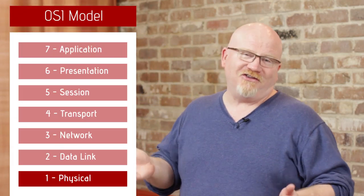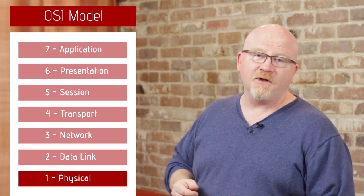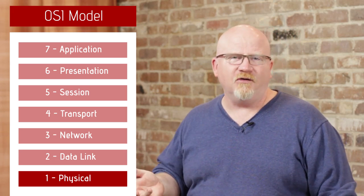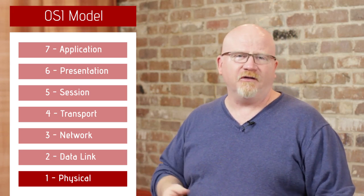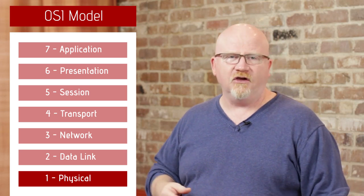For OSI, there's no real bottom or top, but I tend to start at the bottom, which is the most basic part — what we call the physical layer. The physical layer is the easiest part of the OSI seven-layer model. It's basically about what type of cables you use and things like that.